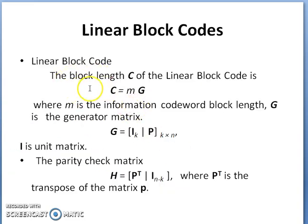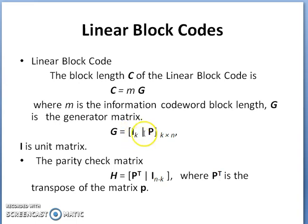To find the linear block code, c = m × G, where m is the information vector, for example 1100, and G is the generator matrix. G is composed of an identity matrix of size k and an arbitrary parity matrix of size k-by-(n-k). The parity check matrix H is used in the decoder to decode the codes. To find H, you compute P transpose from the generator matrix.